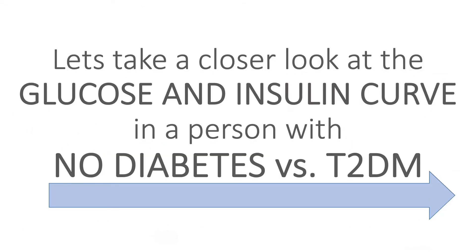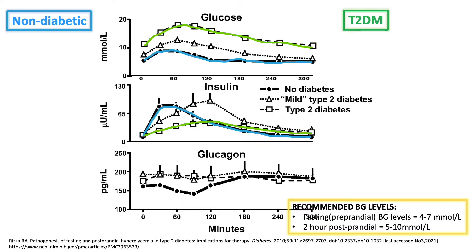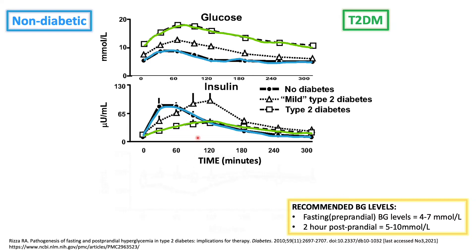In the next slide we're going to take a closer look at the glucose and insulin curve in a person with no diabetes compared to a person with type 2 diabetes. Here we have a glucose, insulin, and glucagon secretion curve, but we're going to focus on glucose and insulin. The person with no diabetes is shown in blue and the person with type 2 diabetes is shown in green.